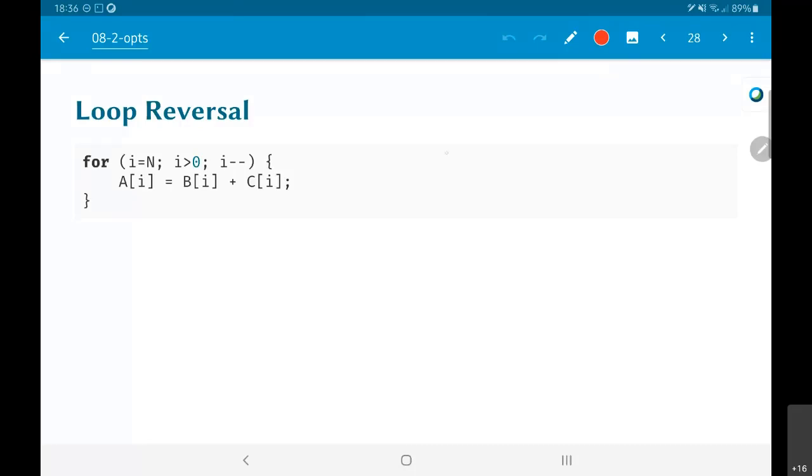One possible situation once again related to a cache is, let's say I have some location in memory. I have this A out here, and I try reading some element from here. So coming to loop reversal, the idea is that you are going to be reading data backwards.